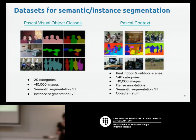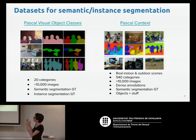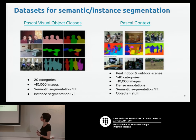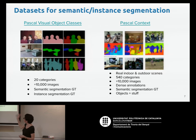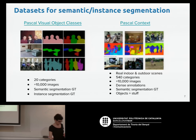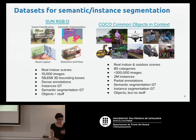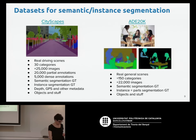Let's briefly review datasets and benchmarks useful for testing methods in these two tasks. One is the well-known Pascal Visual Object Classes, which contains 20 categories and ground truth for semantic and instance segmentation. Then Pascal Context is an extension with more categories and labels for both problems. Another one is COCO, among many other datasets.